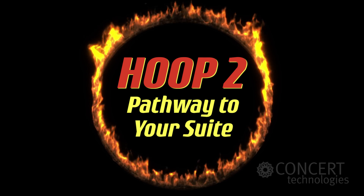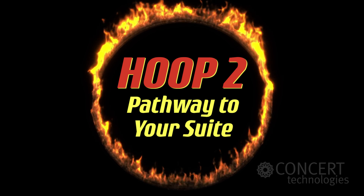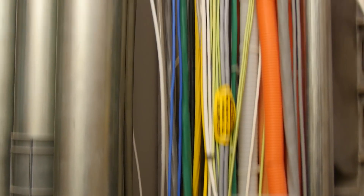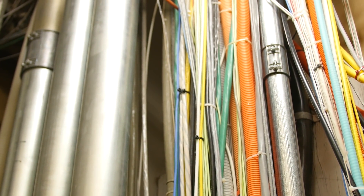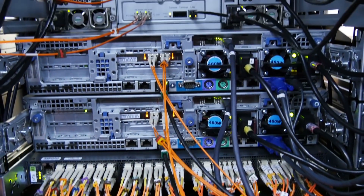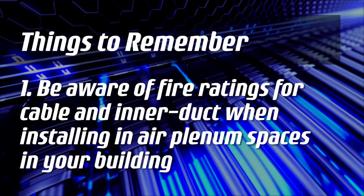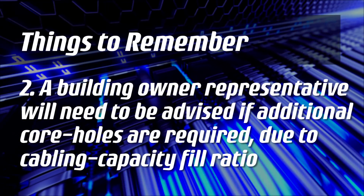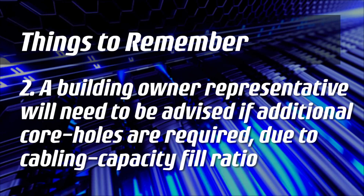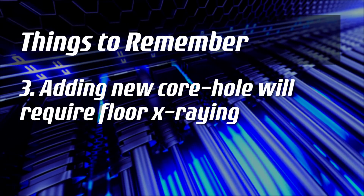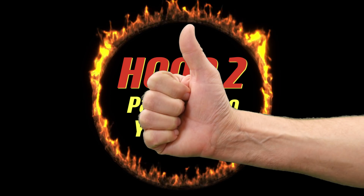Hoop 2: carrier-approved pathway and cable from the building telecom room to the customer's suite. In a multi-story building, a conduit or interduct is typically routed up through a vertical cable path called the riser system. Conduit must then be routed to the customer's networking equipment, typically located in their office space. Be aware of fire ratings for cable and interduct when installing in air plenum spaces in your building. A building owner representative will need to be advised if additional core holes are required due to cabling capacity fill ratio. Adding a new core hole will require floor X-raying. If you already have all this installed, congratulations — you're through another flaming hoop.